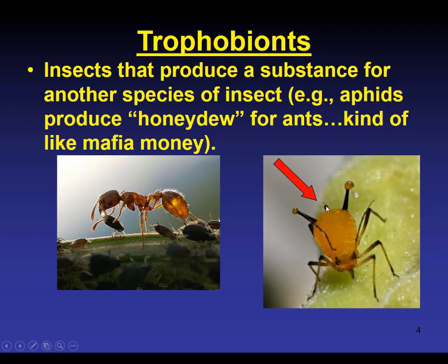The tube at the back end of the aphid produces a droplet of what's called honeydew — sugar water going in, and sugar water and probably some proteins coming out the back end. That acts like payment for those aphids. The ants drink that stuff right from the aphids, and in exchange, the ants protect those aphids. If a ladybug comes crawling down the stem, those ants will go after it and get rid of it.